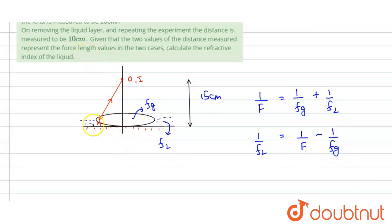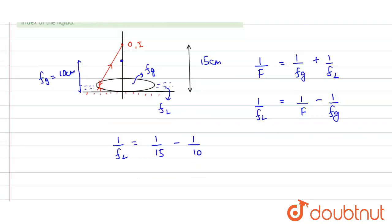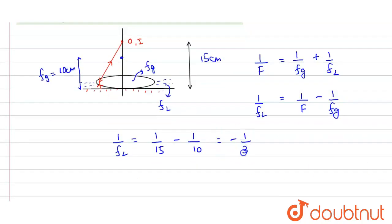In the second situation, we remove the liquid and the image is located at 10 centimeters. The image is again formed on the object itself, meaning light retraces its path and falls normally on the mirror — so parallel rays converge at 10 centimeters. This means 10 centimeters is the focal length of the glass lens, F_G = 10 cm. Therefore: 1/F_L = 1/15 − 1/10, which gives us −1/30 centimeters.